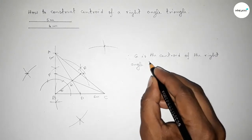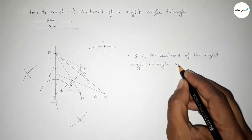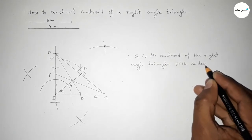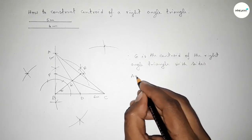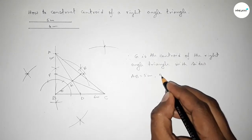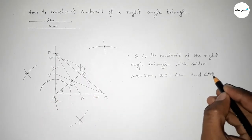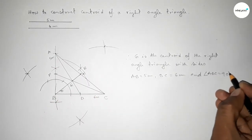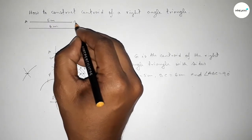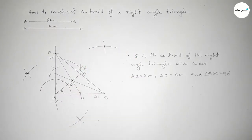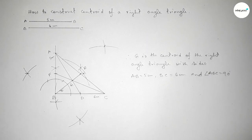So therefore G is the centroid of triangle ABC with AB equal to five centimeters, BC equal to six centimeters, and angle ABC equal to 90 degrees. That's all — thanks for watching. If this video is helpful to you, please share it with your friends. Thanks for watching.